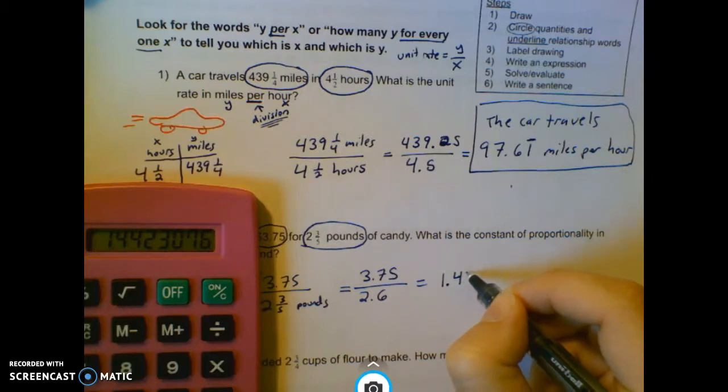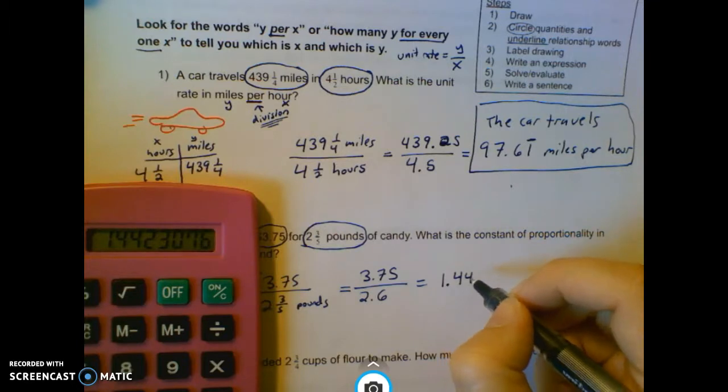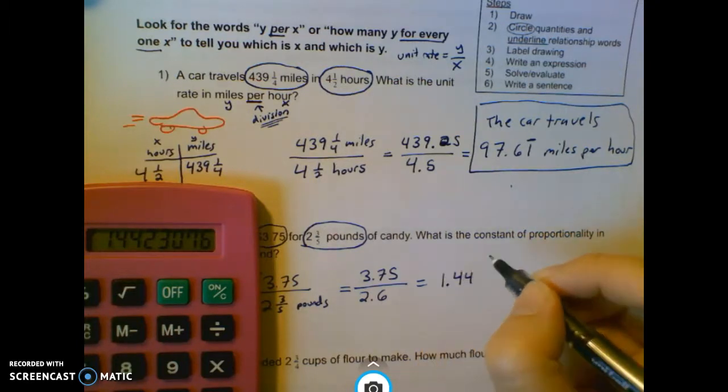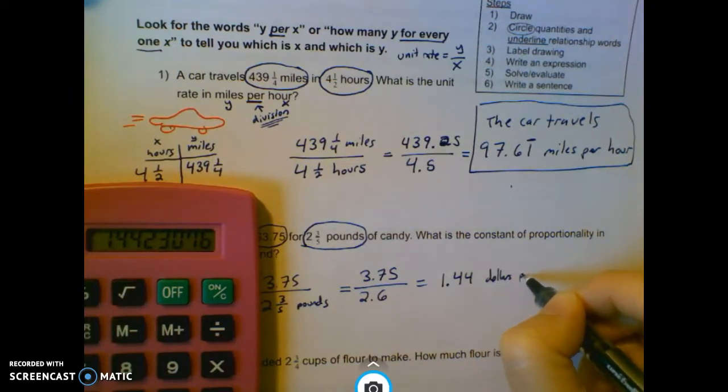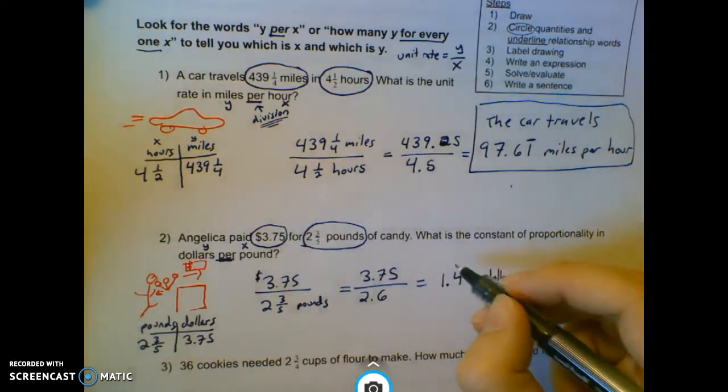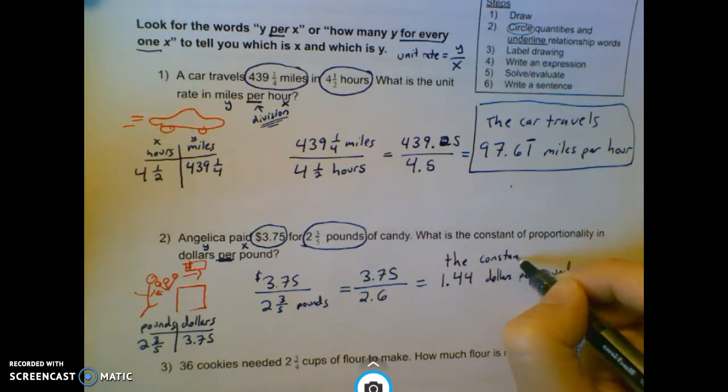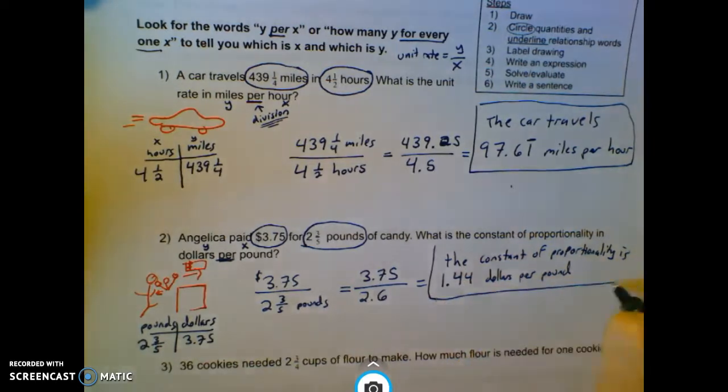1.44. Since this is in dollars, I'm just going to stop there. It's $1.44 per pound. So the constant of proportionality is $1.44 per pound.